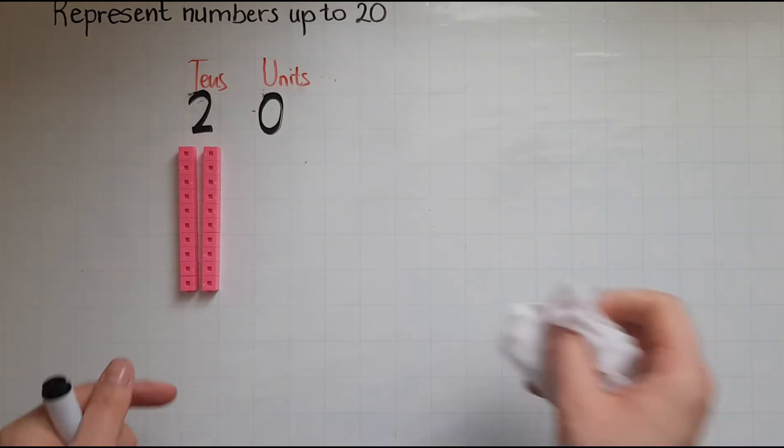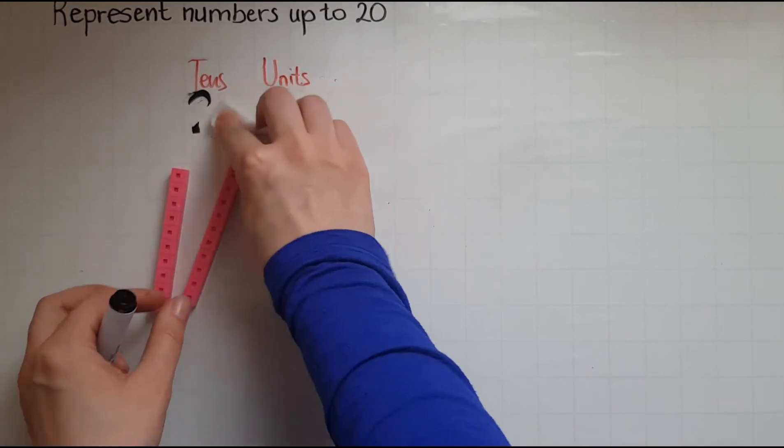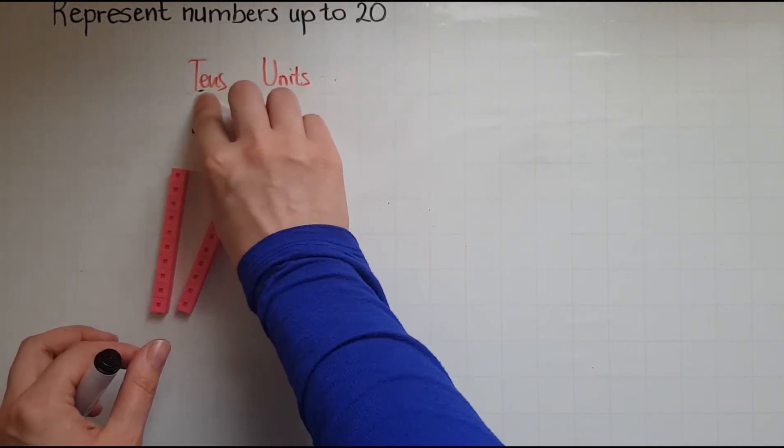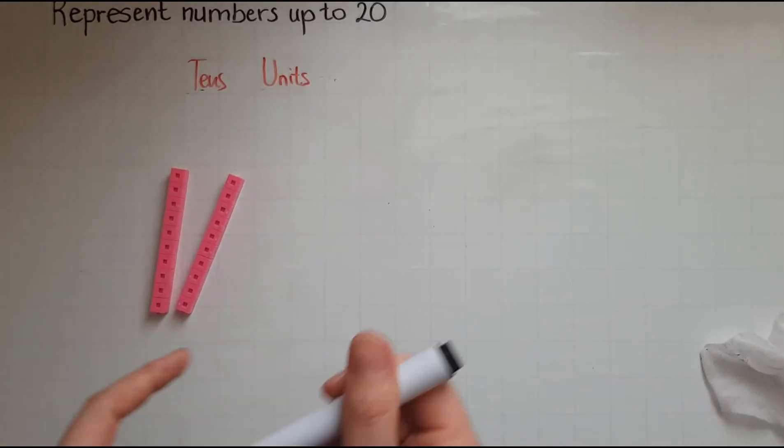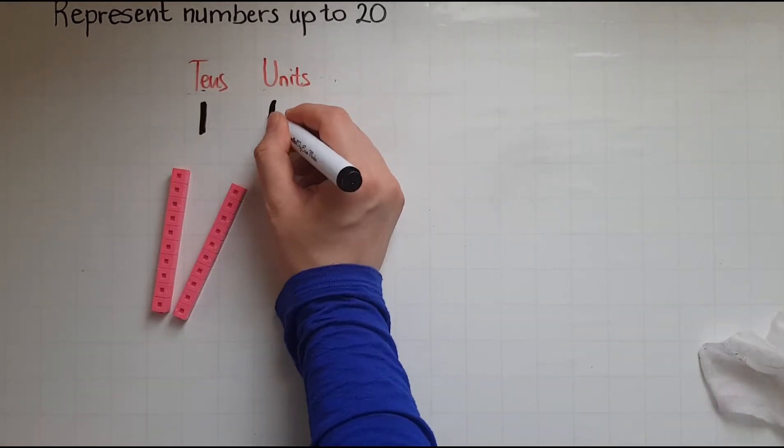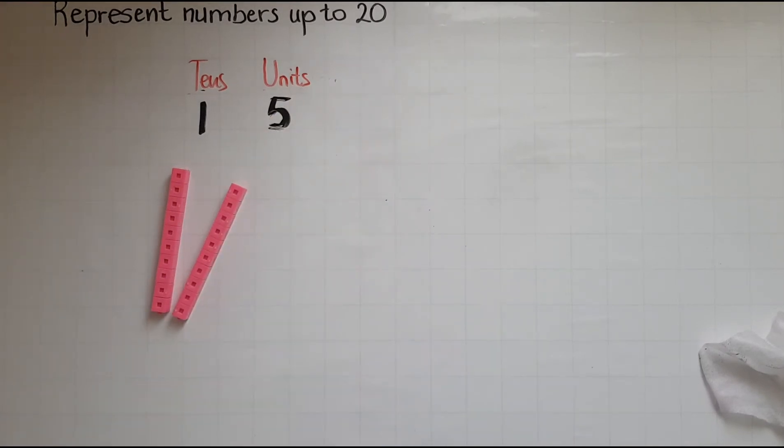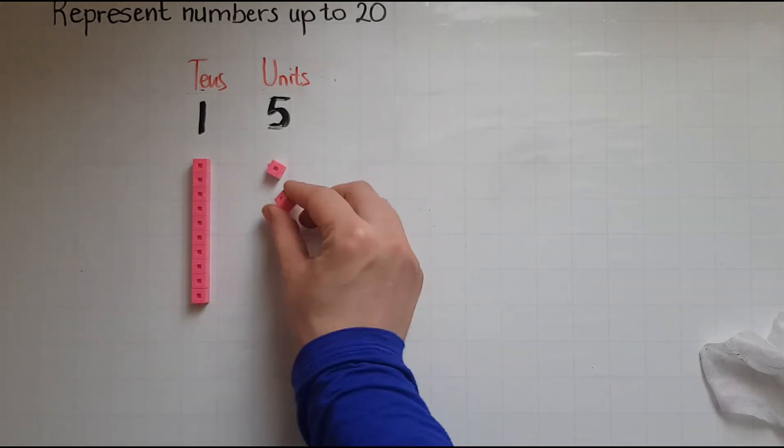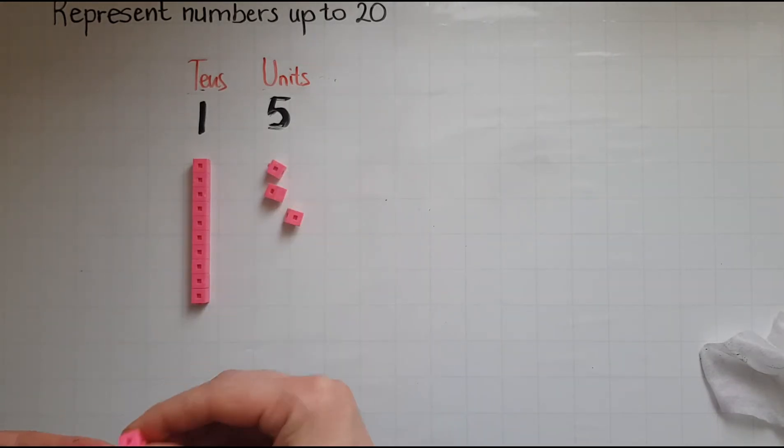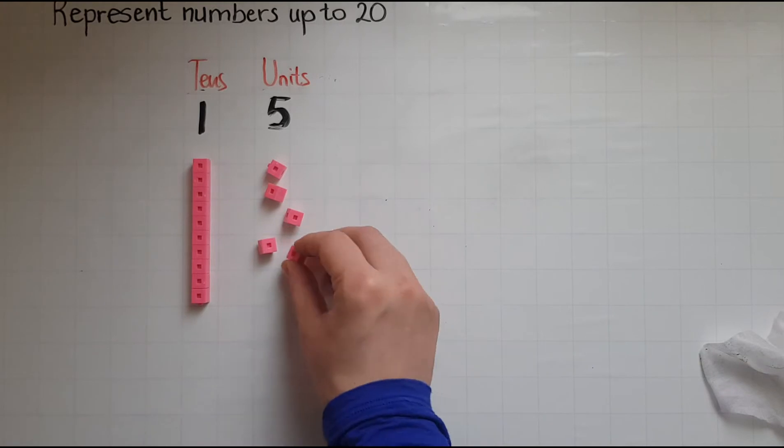Now if the amount is smaller, how do I represent 15? So how many tens do I have? Just one. How many units? That is five of them.